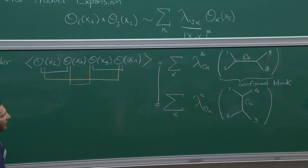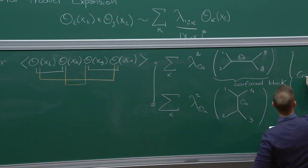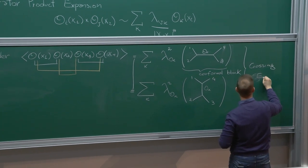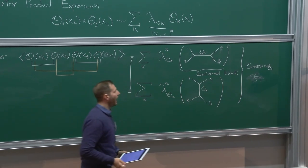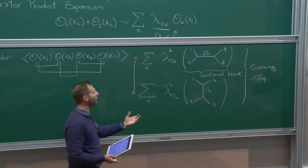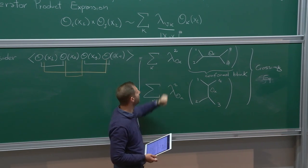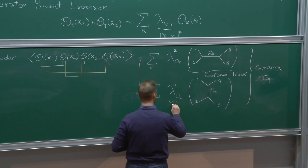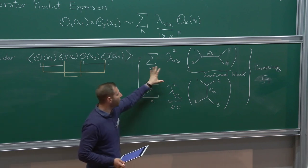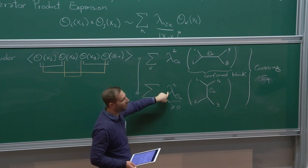There must be a conspiracy of terms such that equality between the two OPE channels is realized. This is called crossing symmetry, or the crossing equation. Because the conformal block functions in the parentheses are known, this is literally a constraint on the set of operators appearing in the sum and their OPE coefficients, which can be shown to be positive.